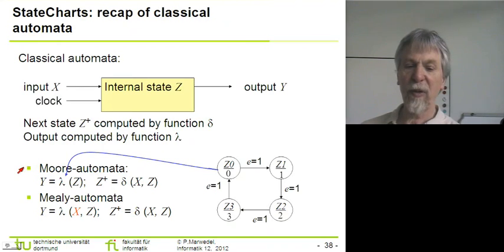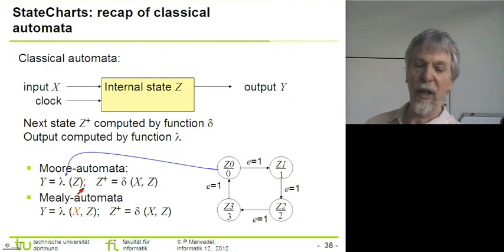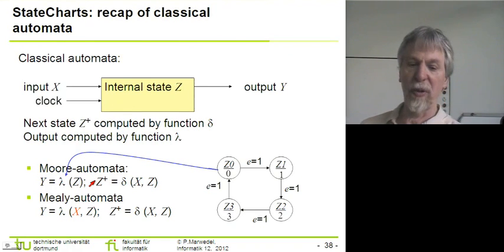We distinguish between Moore automata and Mealy automata. For Moore automata, the output is just a function of the current state and the next state is a function of the current input and current state.